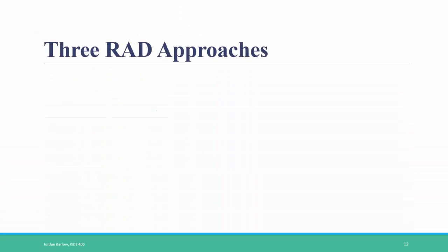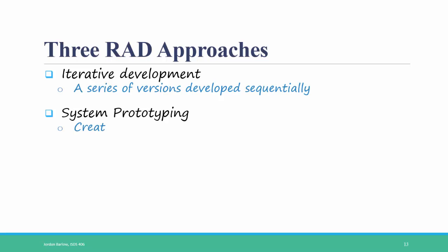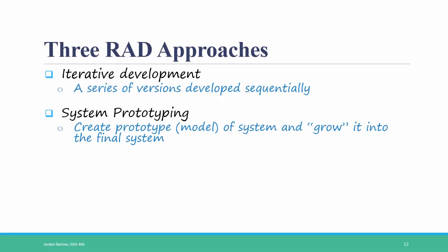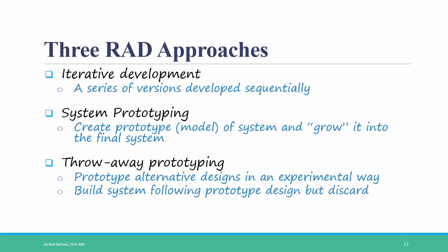Here are three rapid application development approaches. Iterative development involves a series of versions developed sequentially. System prototyping involves creating a prototype or model of the system and growing it into the final system. And throwaway prototyping is like system prototyping, but the prototype alternative designs are done in a more experimental way and are discarded before the actual system is built.